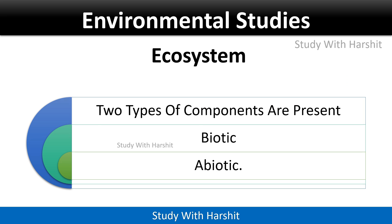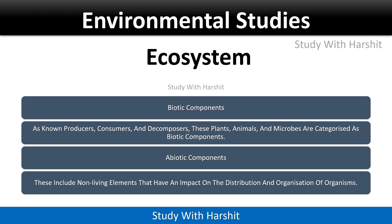Two types of components are present: biotic and abiotic. Biotic components include producers, consumers, and decomposers. Plants, animals, and microbes are categorized as biotic components. Abiotic components include non-living things — elements that have an impact on the distribution and organization of organisms.